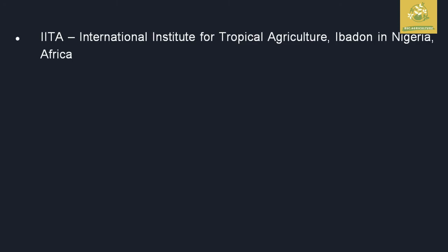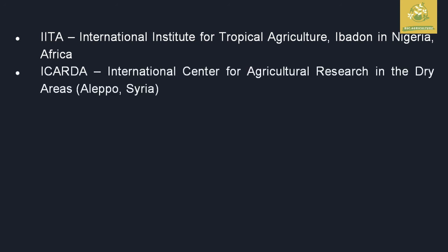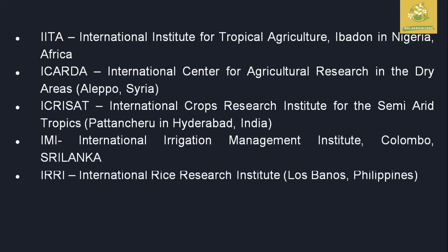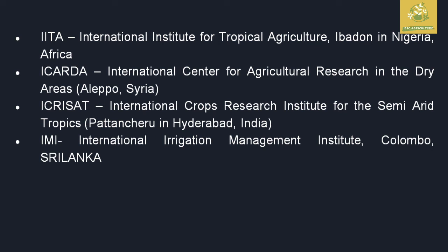IITA (International Institute for Tropical Agriculture) is situated at Ibadan, Nigeria, Africa. ICARDA (International Center for Agricultural Research in the Dry Areas) is situated at Aleppo, Syria. ICRISAT (International Crops Research Institute for the Semi-Arid Tropics) is situated in India. IIMI (International Irrigation Management Institute) is situated at Colombo, Sri Lanka.